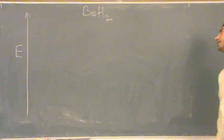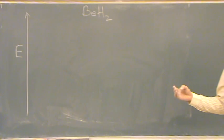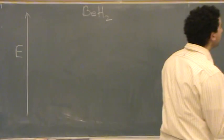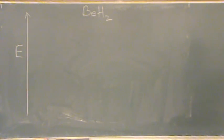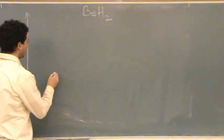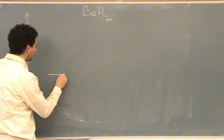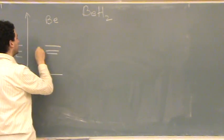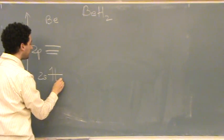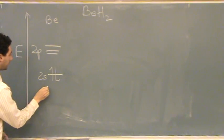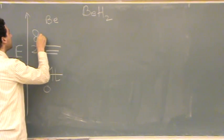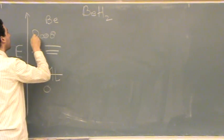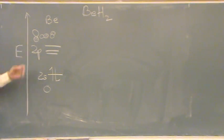Let's try to draw the MO diagram for BeH₂ — two hydrogens on that beryllium. So we've got beryllium; if you look it up on a table, it's 2S2. So let's put beryllium here. We have a 2S and 2P configuration, so we've got an S orbital and then 3 P orbitals.